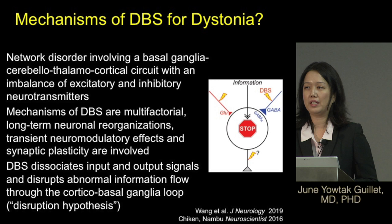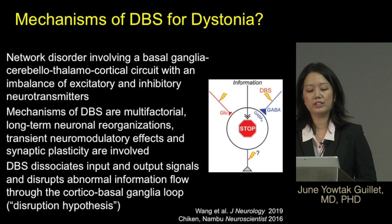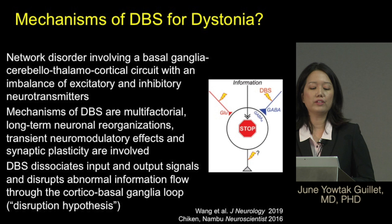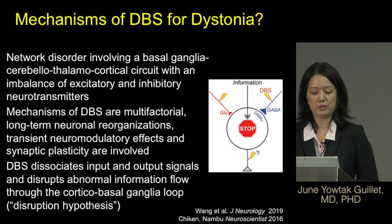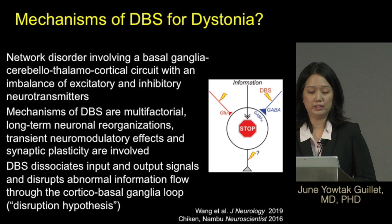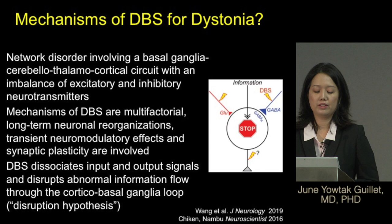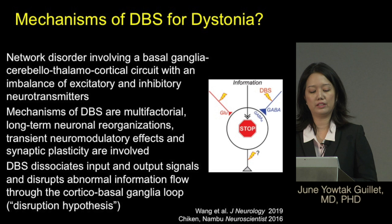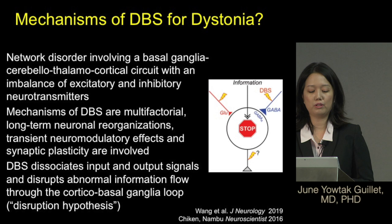The mechanisms of DBS for dystonia are not fully understood and remain an active area of research. It is suggested that dystonia is a network disorder involving the basal ganglia-cerebellothalamo-cortical circuit, with an imbalance in excitatory and inhibitory transmitters such as dopamine and GABA. The mechanisms are thought to be multifactorial, requiring long-term neuronal reorganization and synaptic plasticity. A recent hypothesis suggests that DBS disrupts or dissociates input and output signals, disrupting abnormal information flow through the cortical-basal ganglia motor loop.